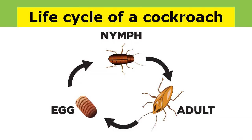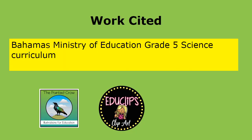The life cycle of a cockroach — where did it start? It starts with the egg, then the nymph, and goes to adult. Thank you very much.